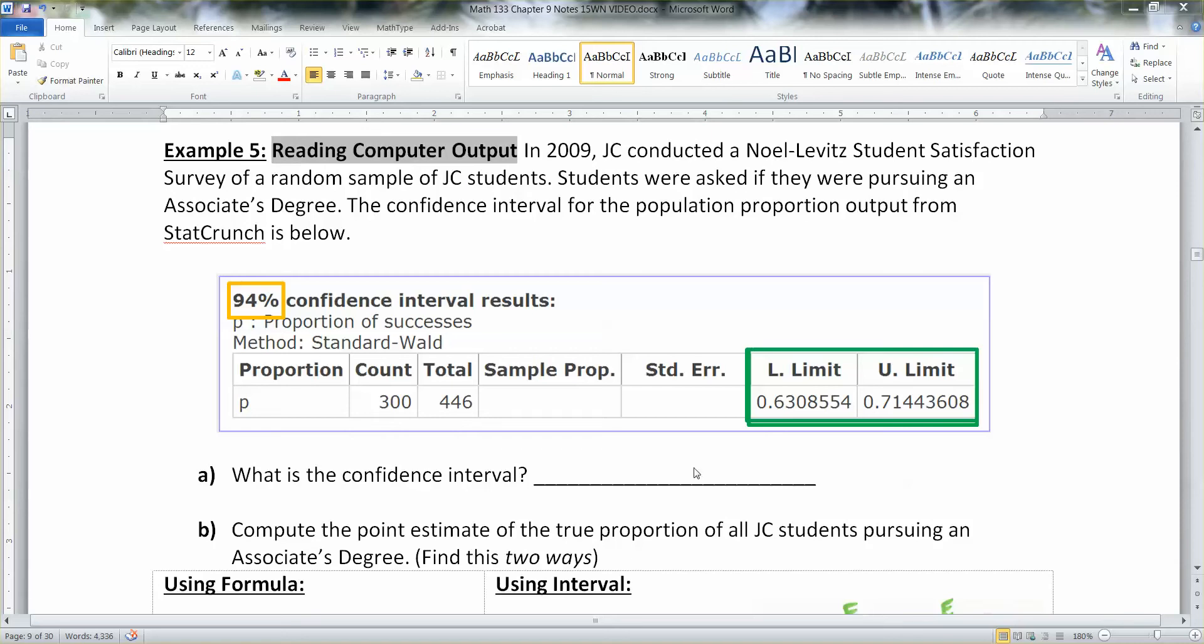In 2009 JC conducted a Noel Levitt student satisfaction survey of a random sample of JC students. Students were asked if they were pursuing an associate's degree. That's something we would like to know as a college because we get funding based off of the number of degrees we award, and if students aren't really interested in degrees we need to know that so we can tell people that give us money from the state that it's not fair to ask us to get degrees, a lot of people don't want them, they just want a class here or there.